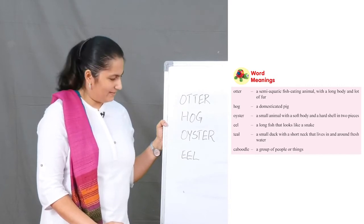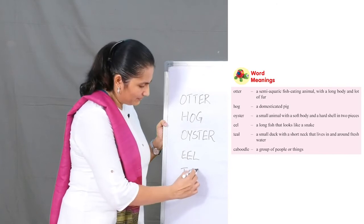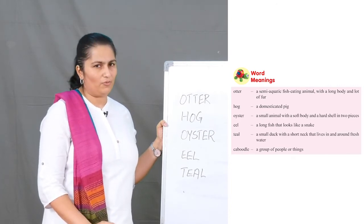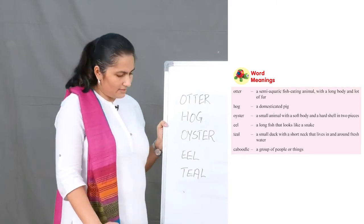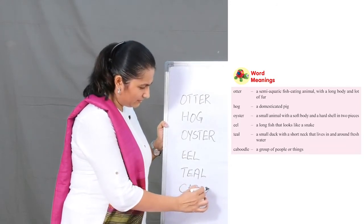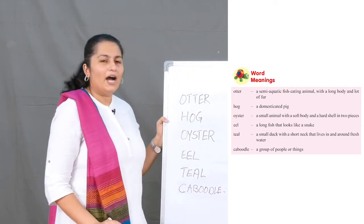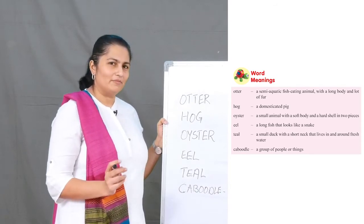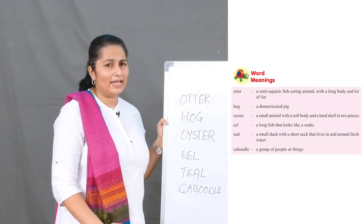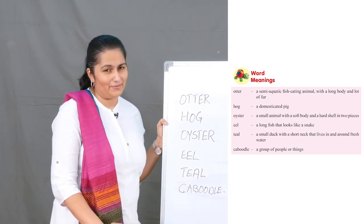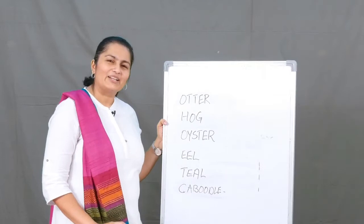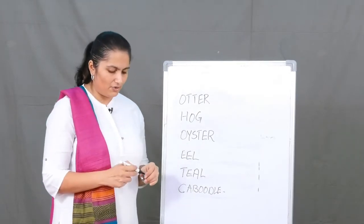The next word is 'teal' — a small duck with a short neck that lives in and around fresh water. The last and most interesting word is 'caboodle' — it means a group of people or things. In the poem it says 'I do hope he baked a caboodle of cakes' — imagine so many animals and needing so much cake to feed them all! So 'caboodle' means a group of things or people. Now you know the meanings and can try to use them in your conversation.